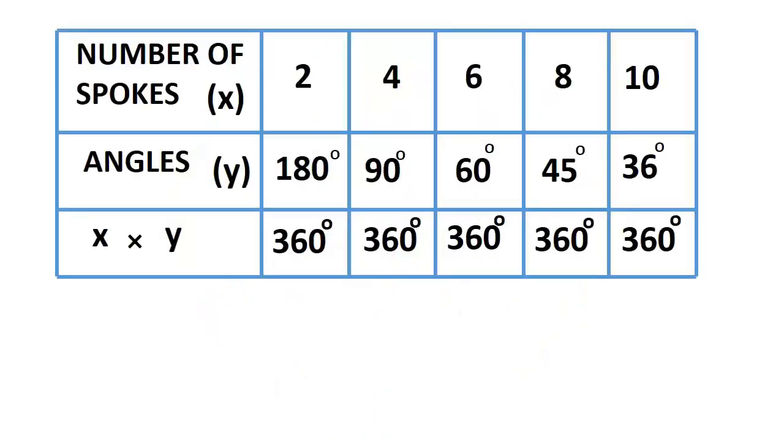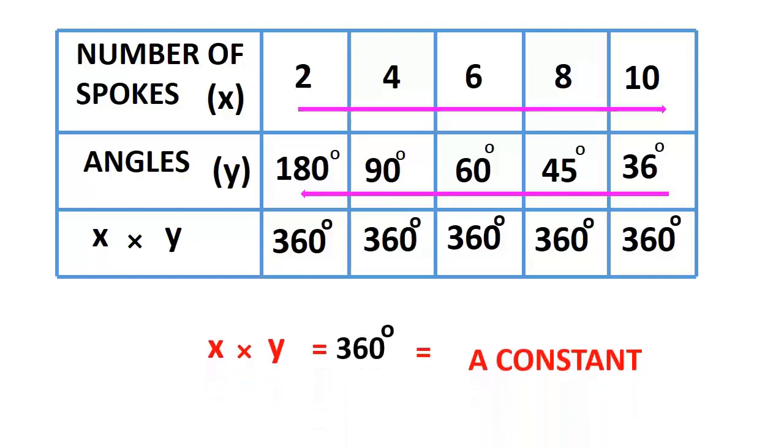Let us see the relationship between the number of spokes and the angle formed between the pair of consecutive spokes. As the number of spokes increases, the angle decreases. So, they are in inverse proportion. In all the cases, we get xy equals 360 degrees. That is a constant.